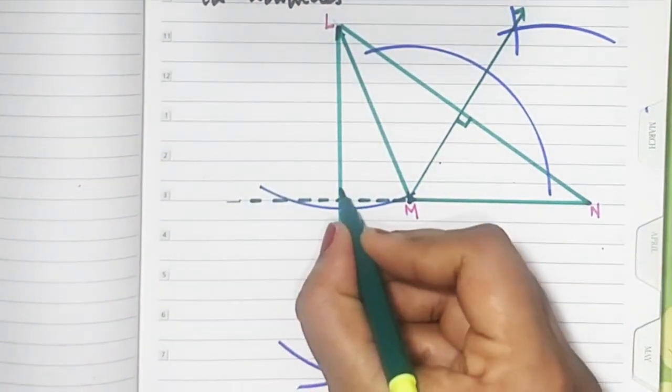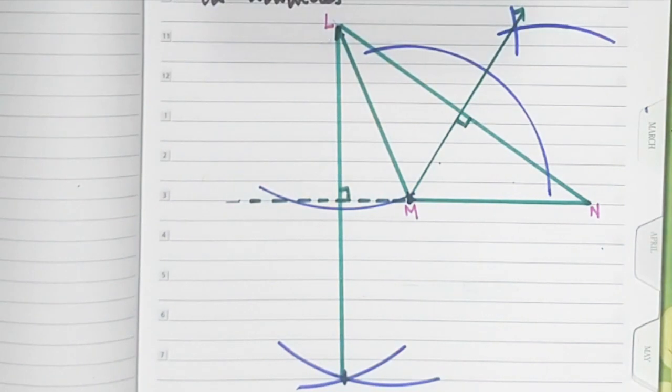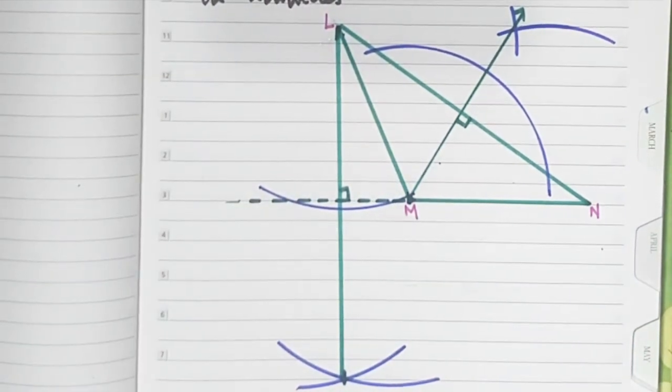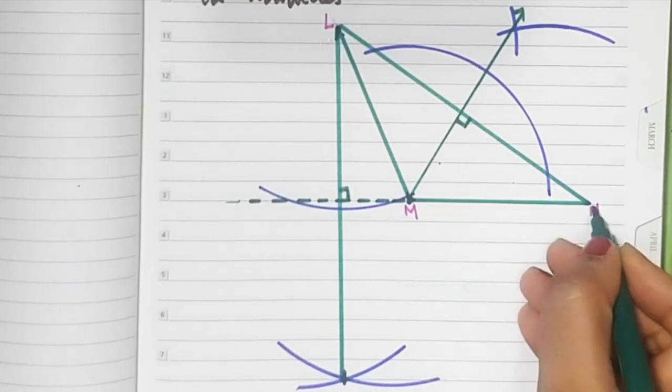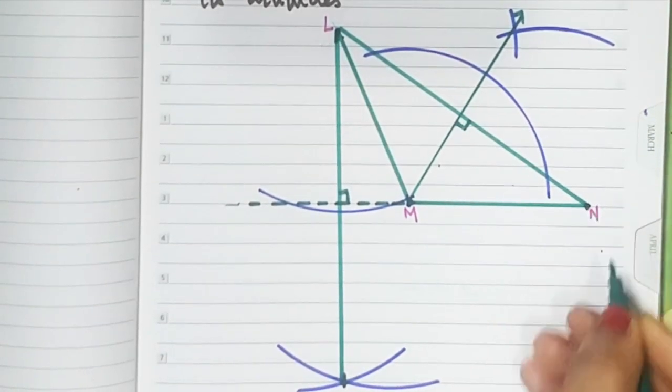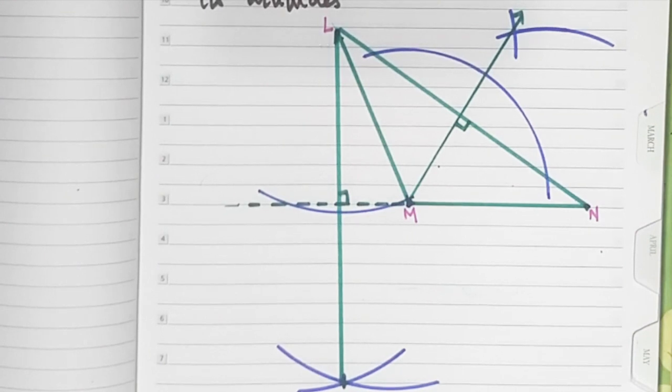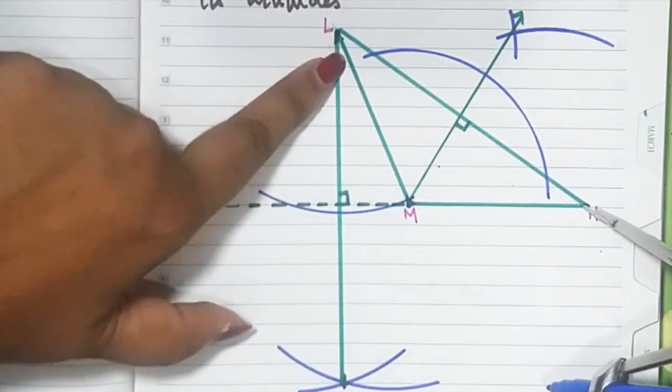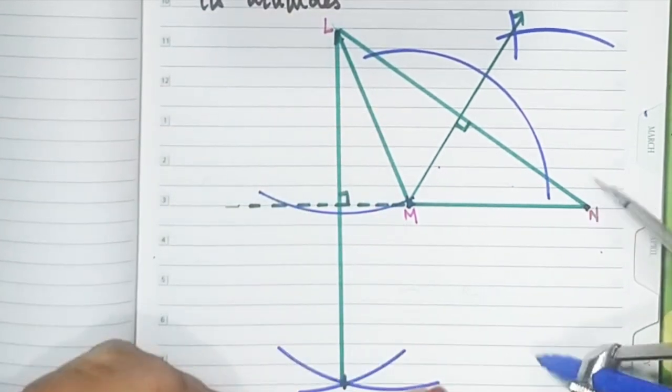Don't forget your 90-degree sign. Two are done. The third one is remaining and has to come from here. In order to draw a smiling face from N, you need a line here. We'll have to extend LM also.